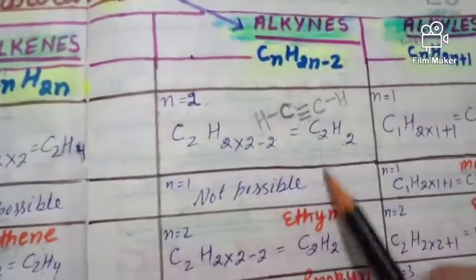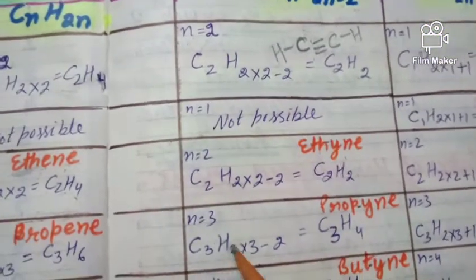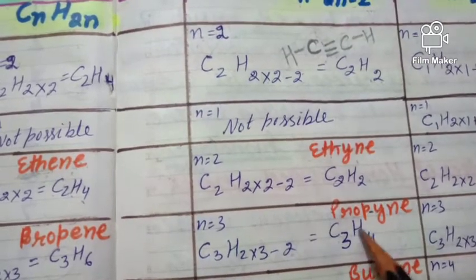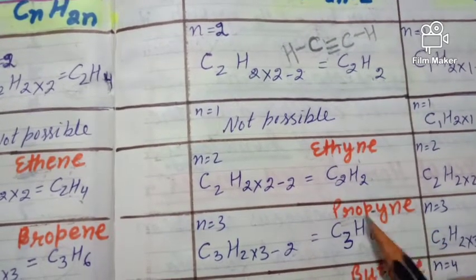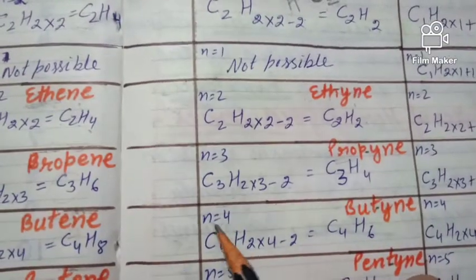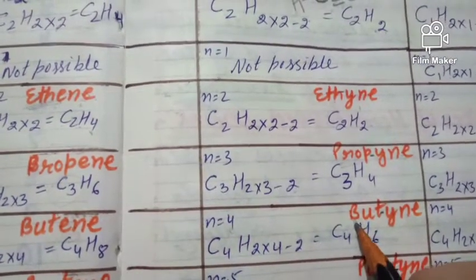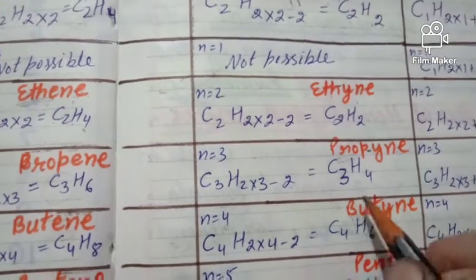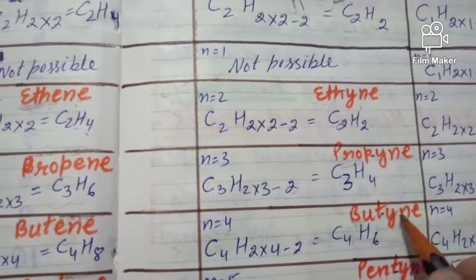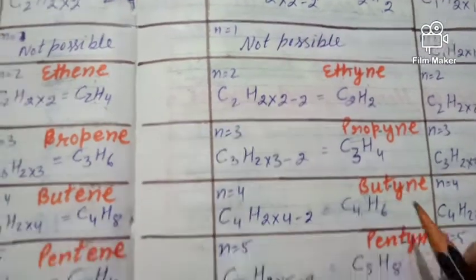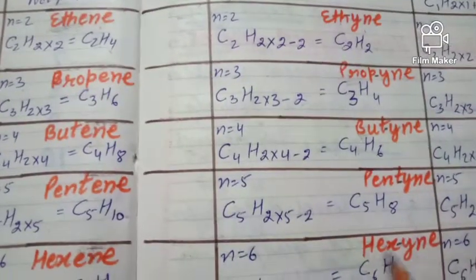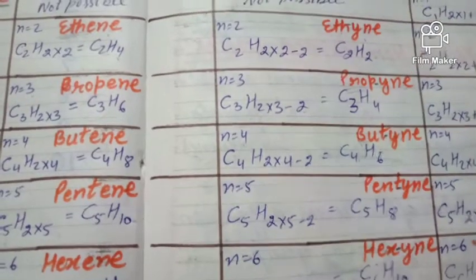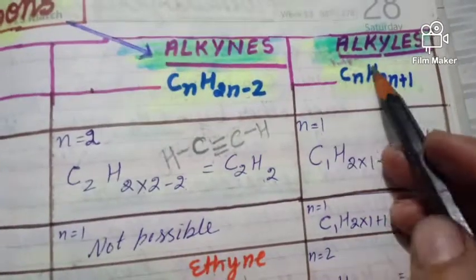For the alkyne series starting at n = 2: C2H2 = ethyne. For n = 3: C3H(2×3−2) = C3H4 = propyne; root word 'prop,' suffix '-yne.' For n = 4: C4H6 = butyne; root word 'but.' For n = 5: C5H8 = pentyne. For n = 6: C6H10 = hexyne. And so on for further members of the alkyne series.